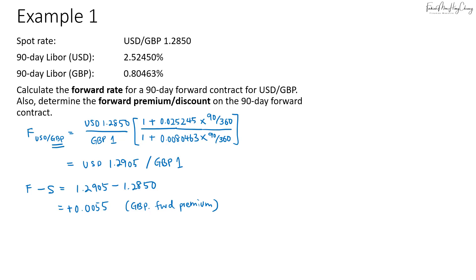If the difference were negative, pound would be a forward discount currency. In some cases they will also convert this to points or pips by multiplying by 10,000, so if you multiply 0.0055 by 10,000 you get 55 points — also called 55 pips. When you are given the spot rate and forward points, be careful to convert the points back to decimal first before adding to the spot rate to get the forward rate.